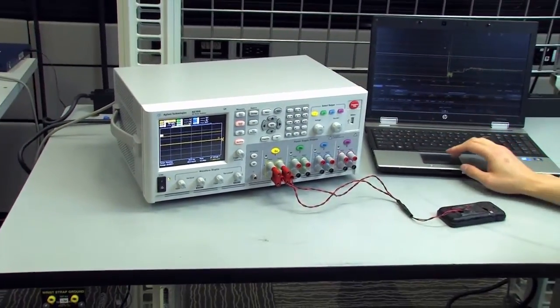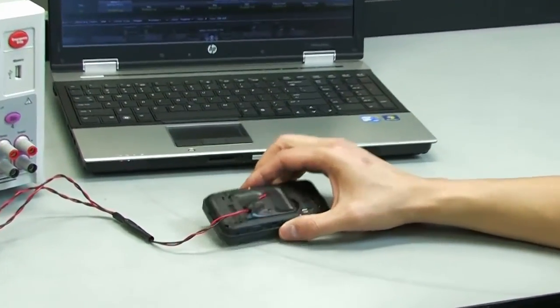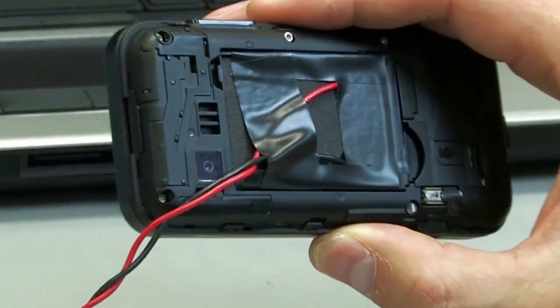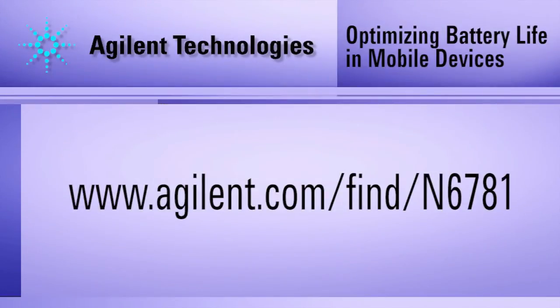As you have seen, it is best not to assume the battery's rated capacity and energy are what you will actually get, making it important to validate them as part of determining run time for your product. For more information, visit the Agilent website at www.agilent.com/find/n6781.